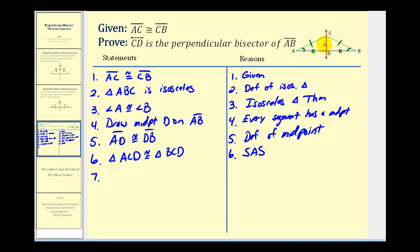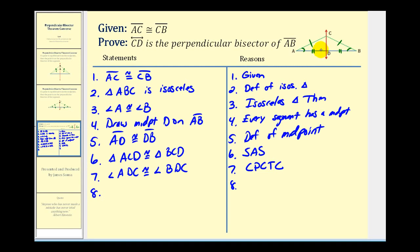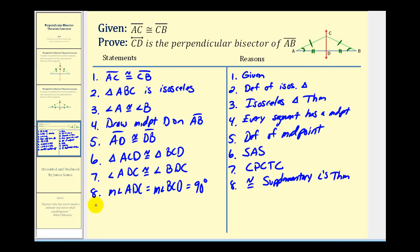Now that we know these two triangles are congruent, we know that angle ADC and angle BDC are congruent — the reason is corresponding parts of congruent triangles are congruent. These two angles also form a linear pair and are therefore supplementary. By the Congruent Supplementary Angles Theorem, the measure of angle ADC must equal the measure of angle BDC, which must equal 90 degrees. Therefore, line CD is perpendicular to segment AB — by definition of perpendicular lines.